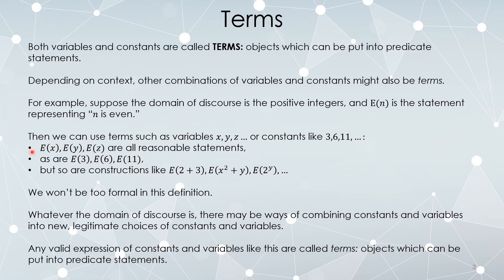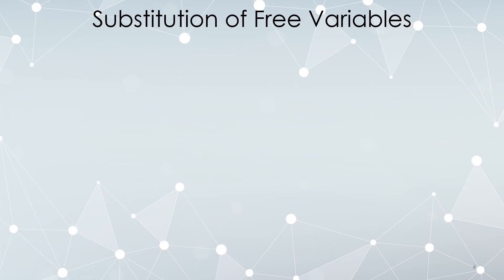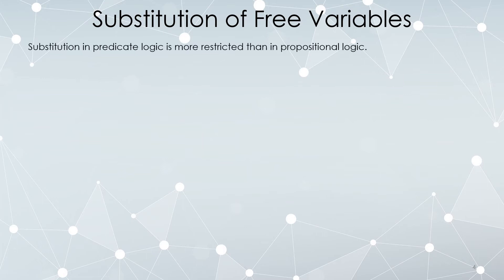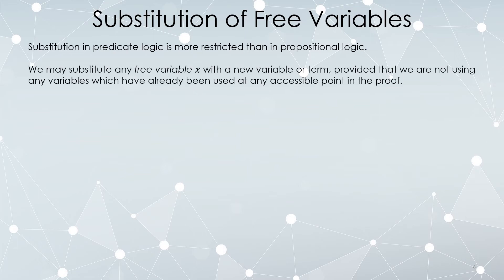Usually our domain of discourse is going to be real numbers or whole numbers, and you can do things like add them or raise them to powers. What does merit some discussion is the substitution principle, specifically when it comes to free variables. Substitution in predicate logic is way more restricted than it was in propositional logic. We can substitute any free variable x with a new variable or term, but it's actually quite restricted — you have to be using no variables that already exist in any line of the proof that can be referred to.